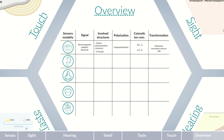During hearing, a sound wave is converted to an electrical signal through the mechanical motion of secondary sensory cells. The opening of mechanosensitive ion channels causes the cells to depolarize, mainly through the influx of potassium ions. The signal is then transmitted as an action potential to downstream neurons via the transmitter glutamate. Smell is mediated by odor molecules — a chemical signal — which bind to specific receptors on primary sensory cells.